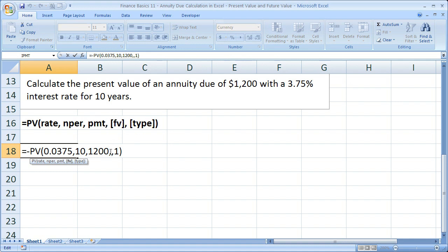So just remember, leave this blank if you need to, put another comma, then put one for type. That's all you have to do to turn a regular annuity problem into an annuity due problem in Excel.